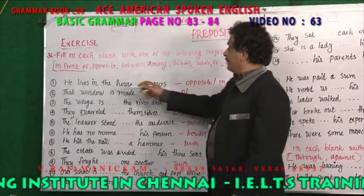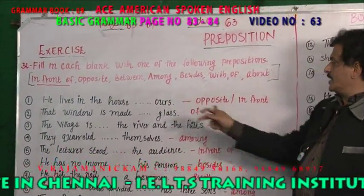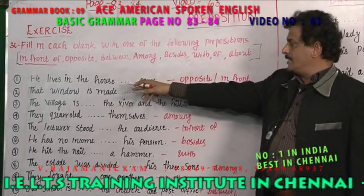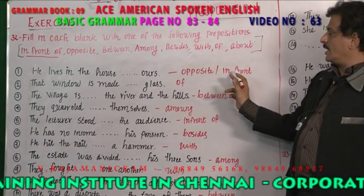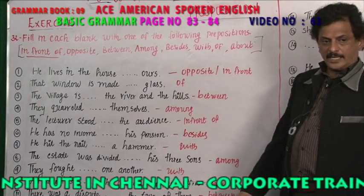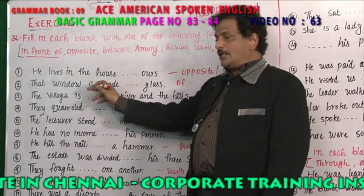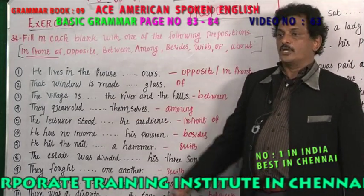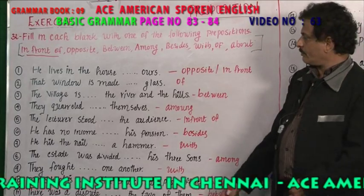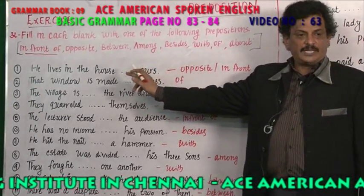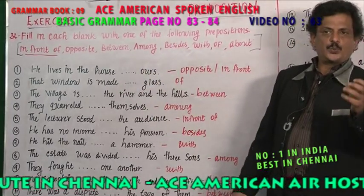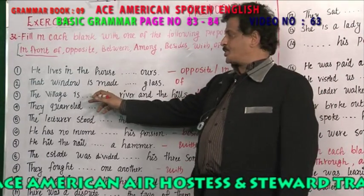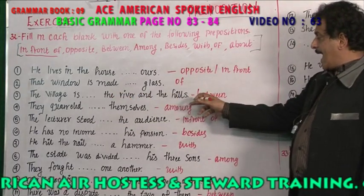Exercise: 'He lives in the house dash his office.' You have to choose one preposition — either 'opposite' or 'in front of.' He lives in the house opposite his office, or in front of his office. Next: 'That window is made dash glass.' That window is made of glass. 'Of' is used with material. 'Of' is used with living beings other than human beings.